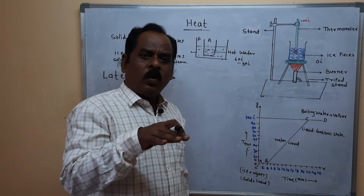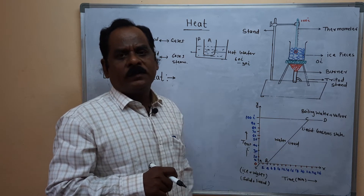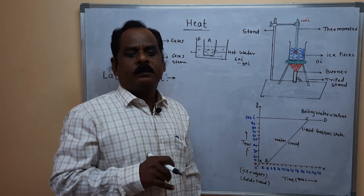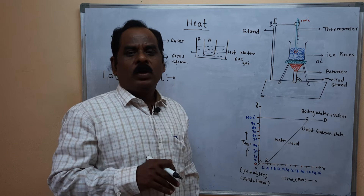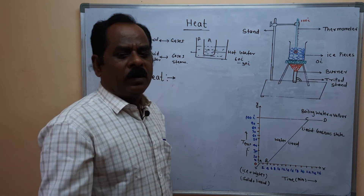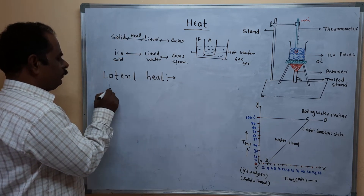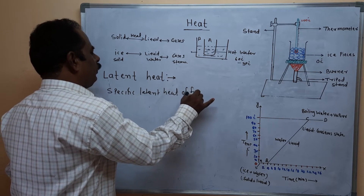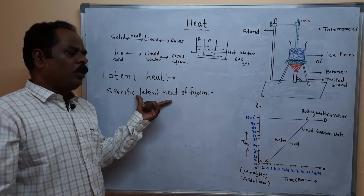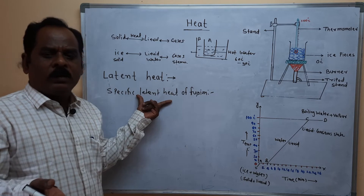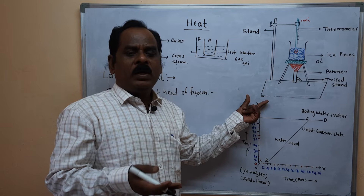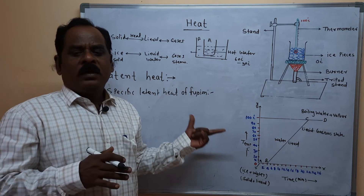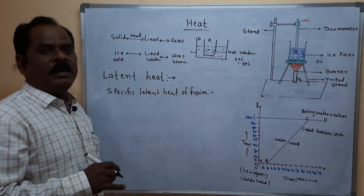Whenever the whole ice is converted into water, then the temperature increases again. The amount of heat energy absorbed at a constant temperature by a unit mass of solid to convert into liquid state is called the specific latent heat of fusion or melting.